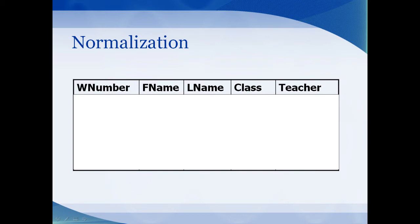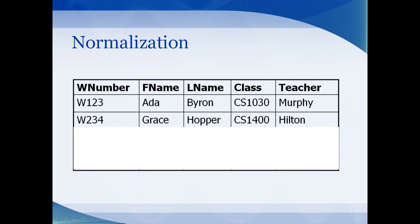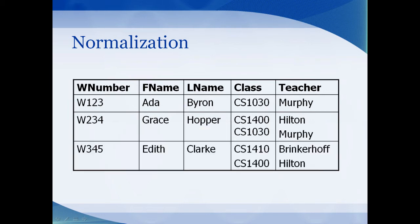Let's give you an example to demonstrate. Suppose you have a student table with fields: first name, last name, teacher, class, and grade. Maybe Ada Byram is taking my class, and Grace Hopper is taking Professor Hilton's 1400 class — so far looks okay. But now maybe Grace Hopper is taking my class as well. We need to put that information somewhere, but there's just one cell. It could be confusing — how do you tell which professor is teaching which class? Who got the A? So we better normalize the data.